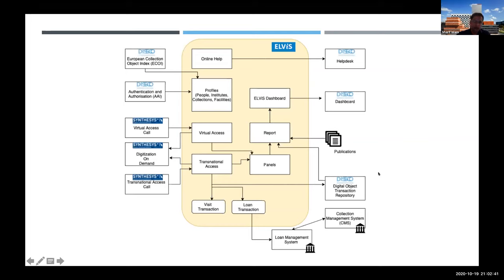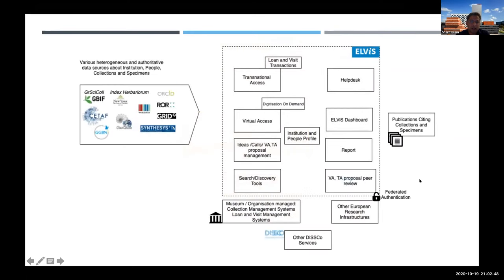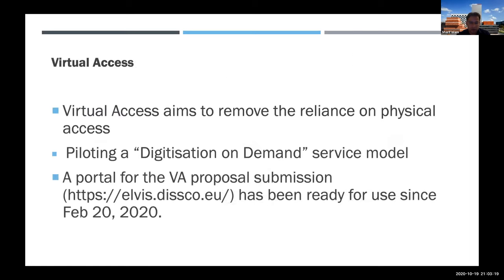The data landscape involves consolidating, combining, and filtering data from different aggregators — both biodiversity and non-biodiversity data — plus current Synthesis project data in different formats, and connecting organizations, people, and institutions. One component worked on was virtual access — removing reliance on physical access and tying in with the digitization-on-demand service model. Since February 2020 the portal has been online, where people submitted proposals for imaging projects involving collections at one or more institutions with collaborators coming together.